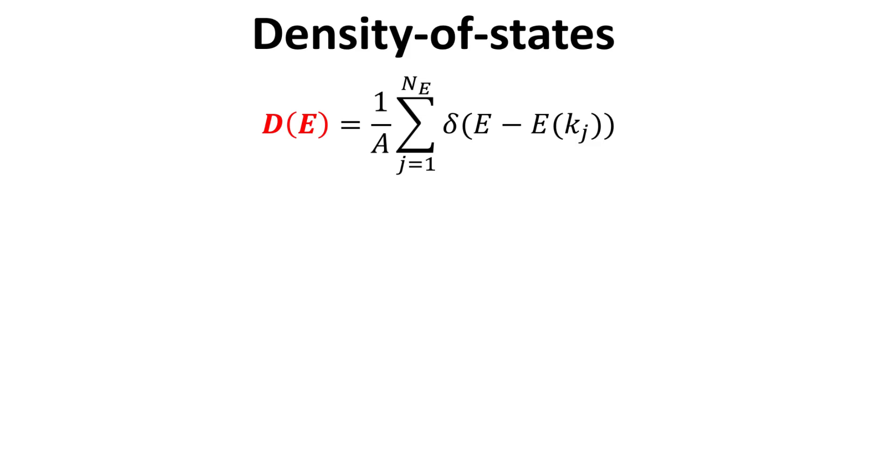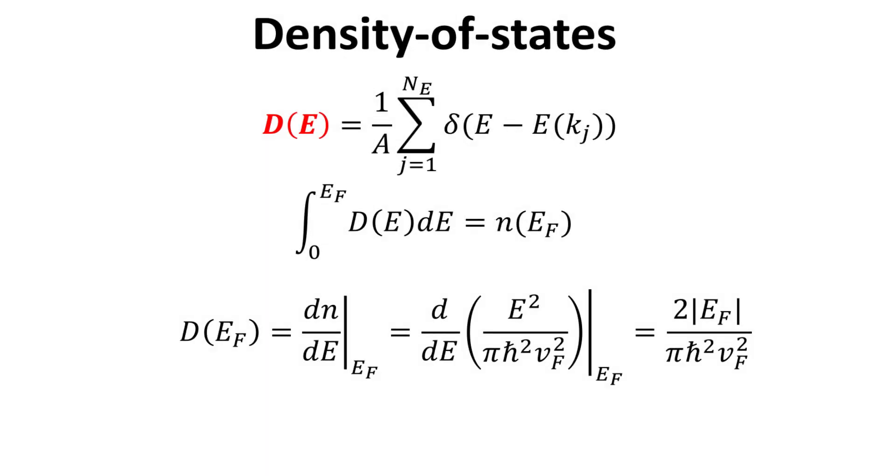To derive an explicit expression for the density of states, d, let's recall again its definition. d is defined as the number of electronic states at a given energy, E, per unit area. At zero temperature, the electron density is simply the integration of d over energy from zero up to the Fermi level. d can then be obtained by taking the derivative of n with respect to E.